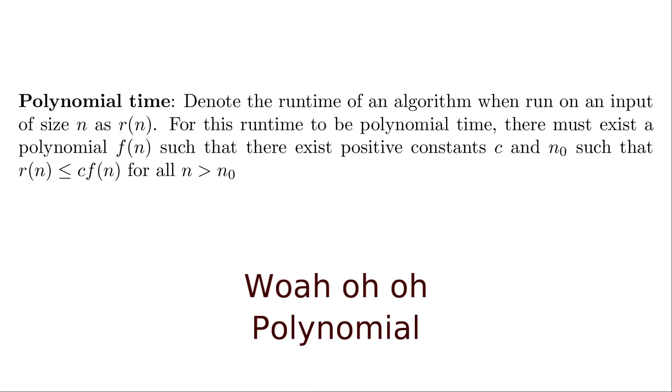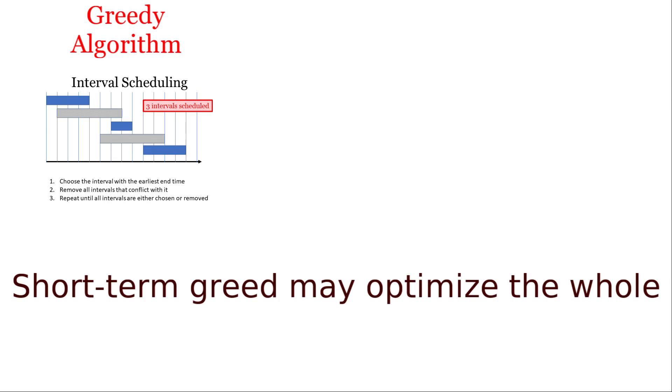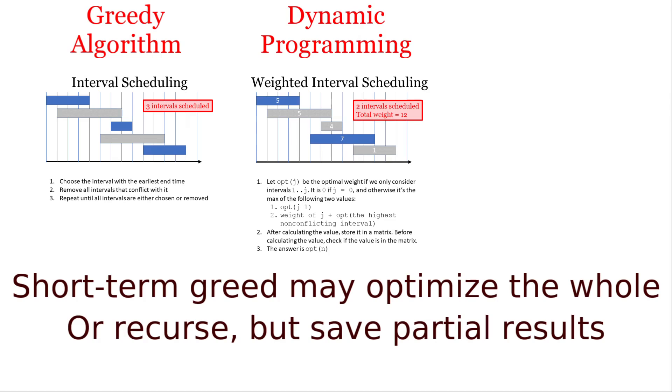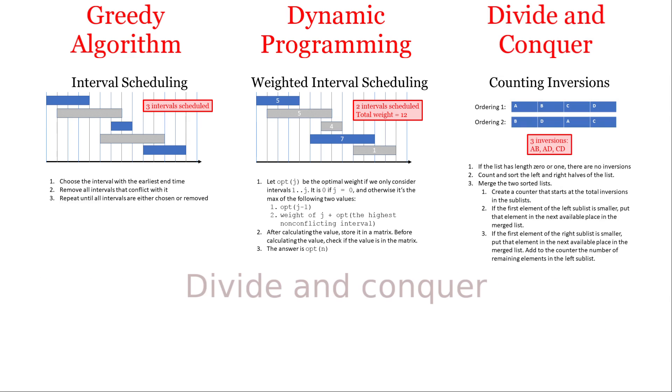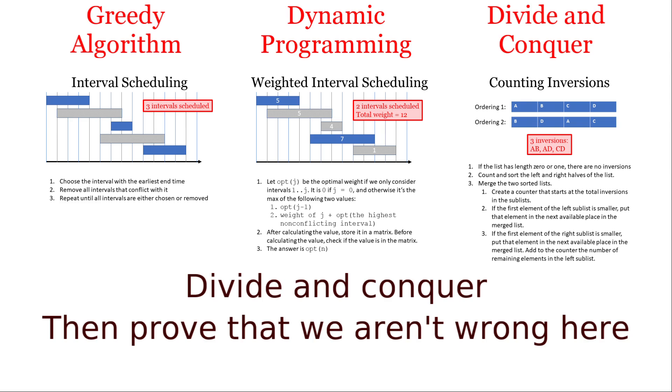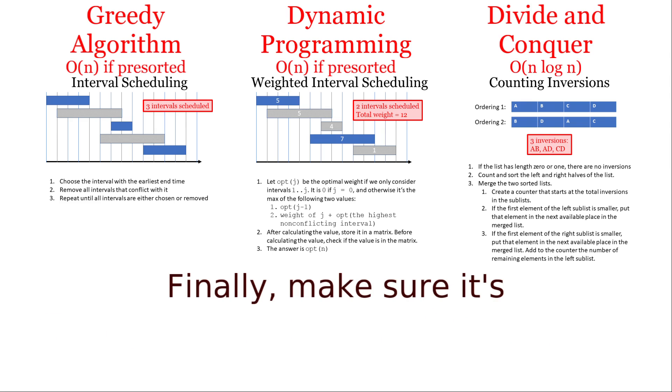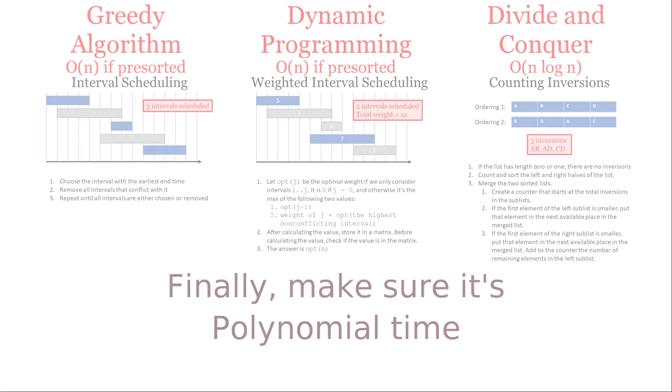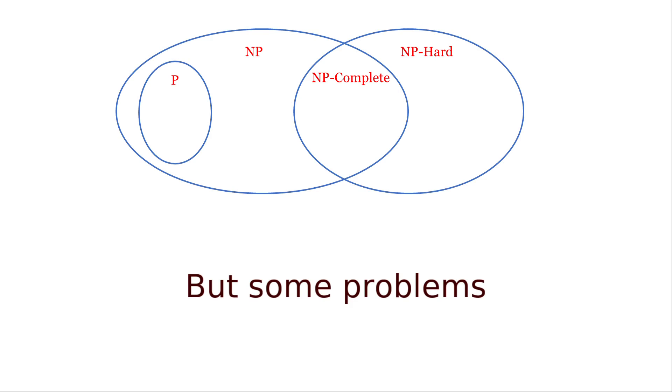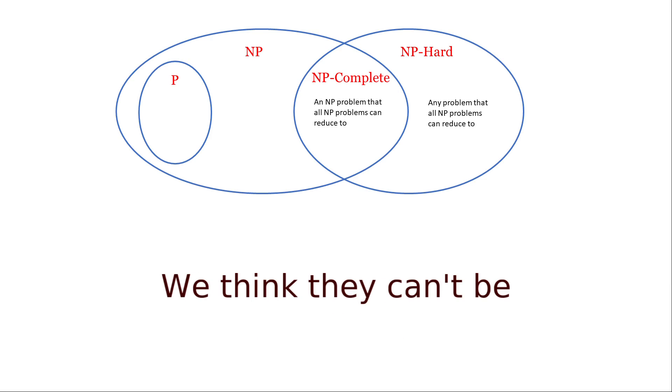Polynomial, polynomial. Greedy may optimize the whole or recurse but save partial results. Divide and conquer, then prove that we aren't wrong. We can finally make sure it's polynomial time. But some problems are NP-hard we think they can't be efficiently.